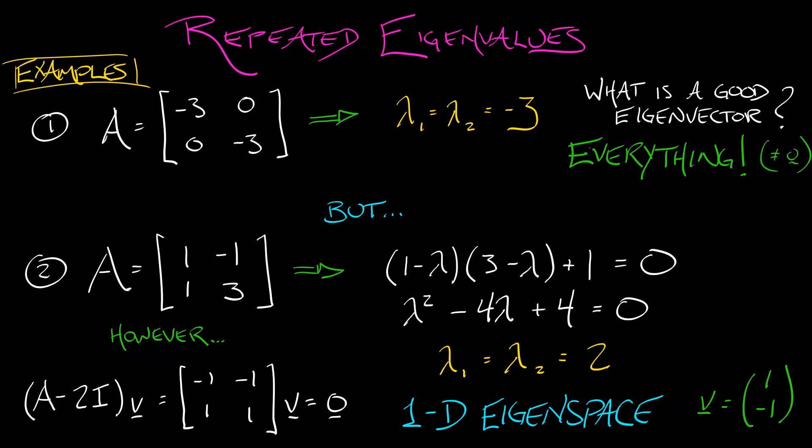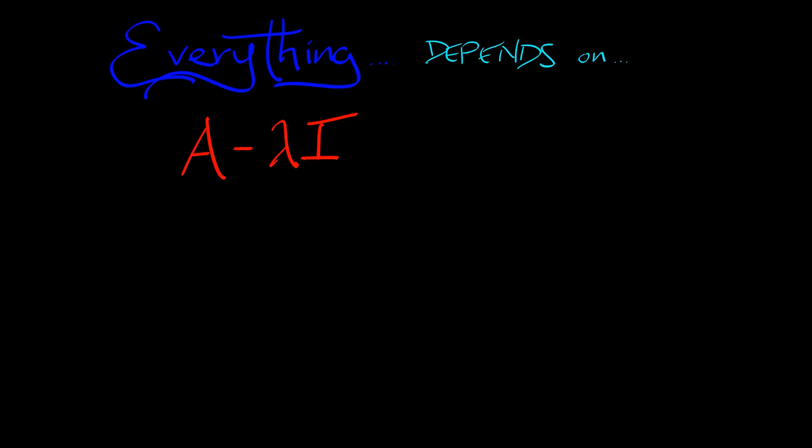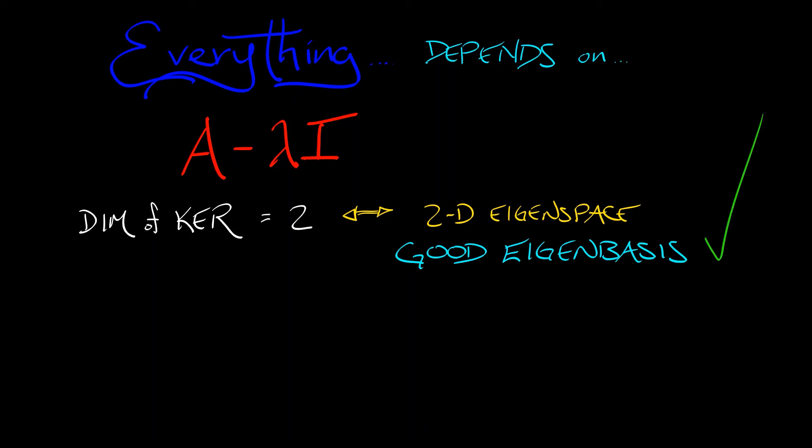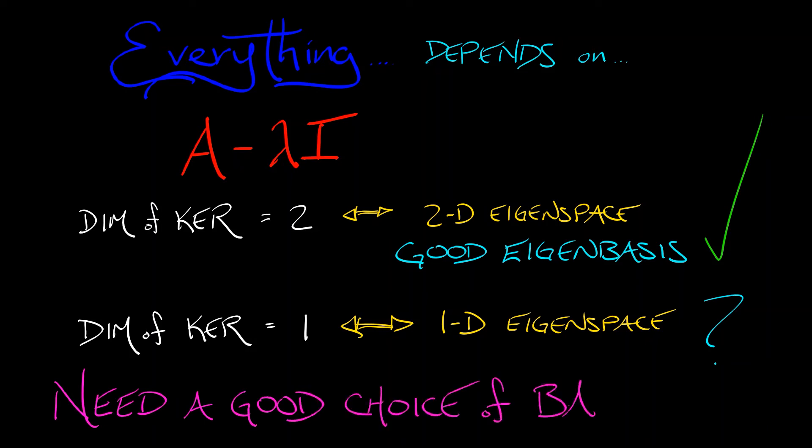This is the more difficult case. The thing to remember when you run into repeated eigenvalues is that everything depends on this operator A - λI. You look at that guy and its kernel. If the dimension of that kernel is two, that's great. You've got a two-dimensional eigenspace. You can build a good eigenbasis, everything is really nice. But if the dimension of that kernel is one, you've got a one-dimensional eigenspace, then for the applications that we want, it's not good enough because we need a basis that is well-adapted to the matrix A.